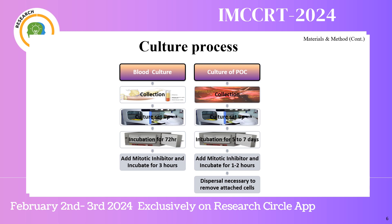Culture process: For lymphocyte culture, blood samples were collected in sodium heparin vacutainer. Cells were washed with normal saline. After centrifugation, medium was added and kept for 72 hours of incubation. Prior to harvesting, colchicine was added three hours before, and metaphase preparation was done on glass slides.